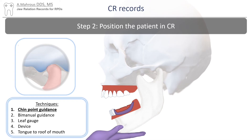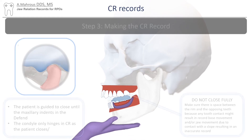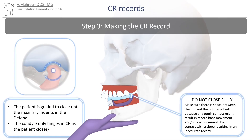Multiple techniques have been described to do this, including chin point guidance, bimanual guidance, a leaf gauge, a repositioning device, or asking the patient to move their tongue to the roof of their mouth. Once the patient has reached CR, the occlusal registration material is put onto the record base. The patient is then instructed to bite down into the occlusal registration material enough to make indentations in the material. It is recommended that the patient not fully close, to prevent any possible movement of the record base.